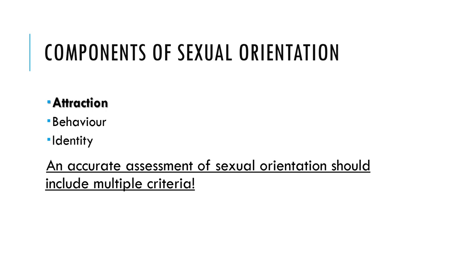We can consider sexual orientation as a multi-dimensional construct which includes the gender or genders of the sexual partners we have, the direction of our attraction, or the identity label we use to identify ourselves. The three components can be aligned, as happens to most people, or disaligned, so an accurate assessment of sexual orientation should include multiple criteria at a time.